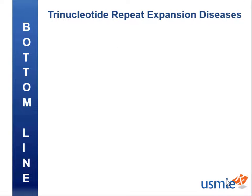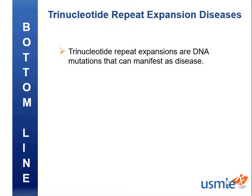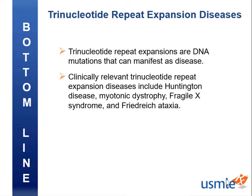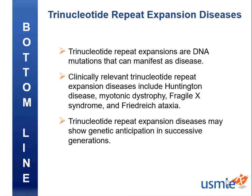What's the bottom line? Trinucleotide repeat expansions are DNA mutations that can manifest as disease. Clinically relevant trinucleotide repeat expansion diseases include Huntington's disease, myotonic dystrophy, fragile X syndrome, and Friedreich's ataxia. And trinucleotide repeat expansion diseases may show genetic anticipation in successive generations.